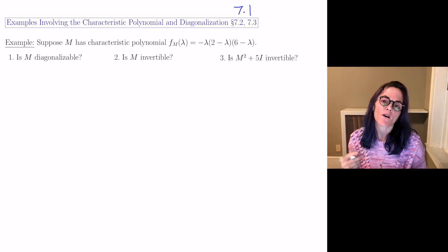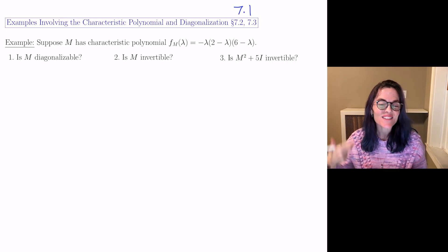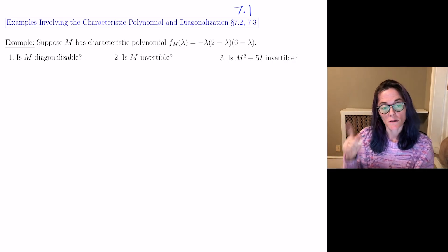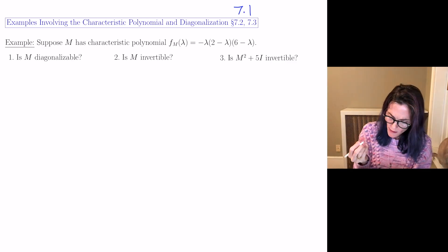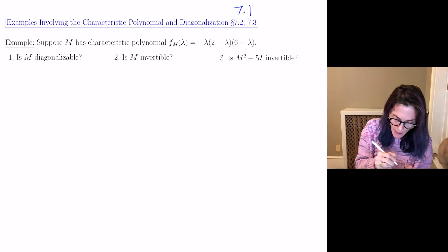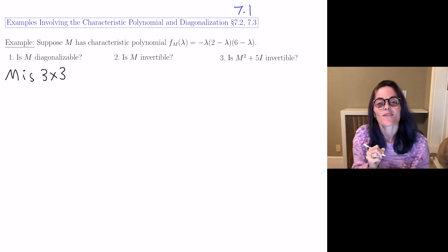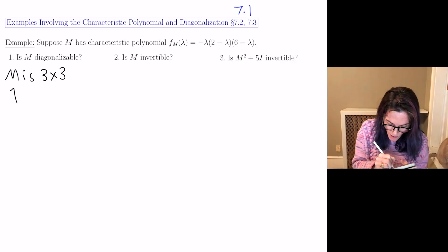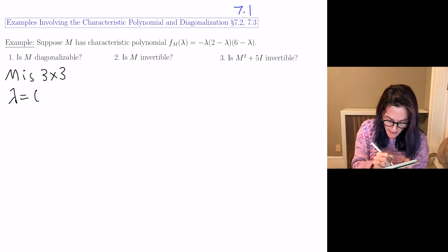Those were the three sections that involve diagonalization, finding eigenvalues, and finding eigenvectors. For my first question, we have matrix m and we're given its characteristic polynomial. m is 3 by 3 — that is the degree of the polynomial — and we see the eigenvalues are lambda equals 0, 2, and 6.